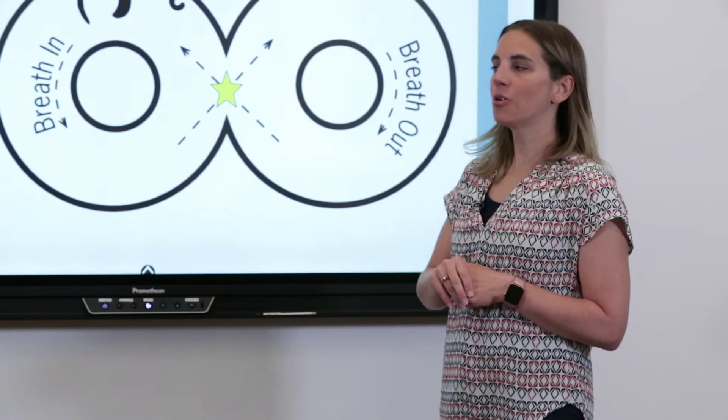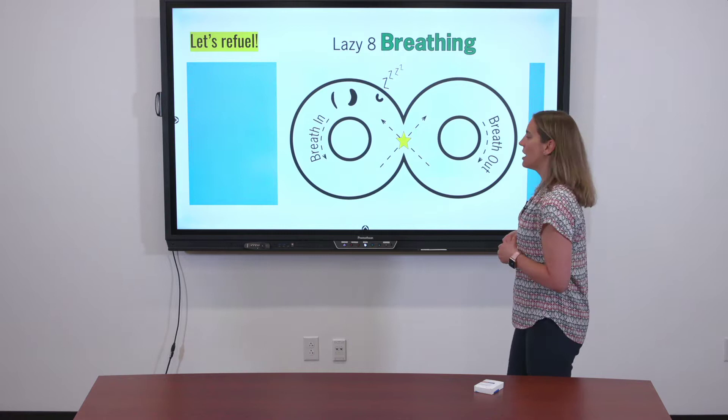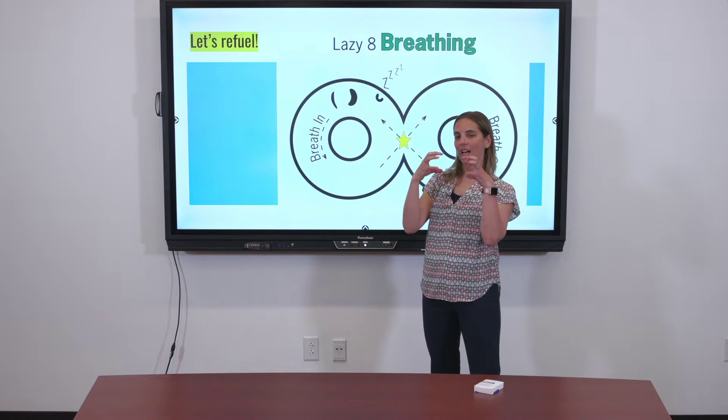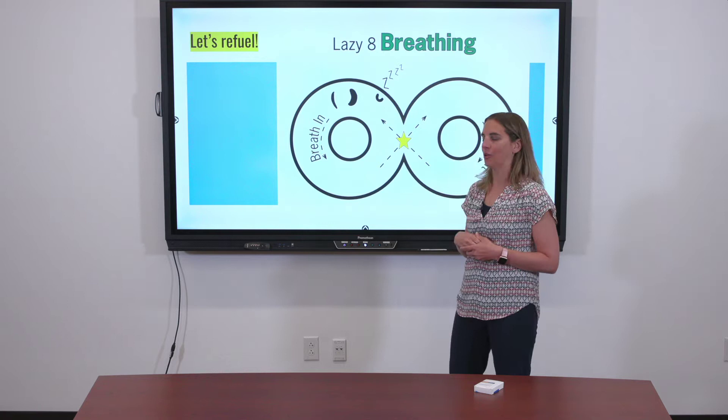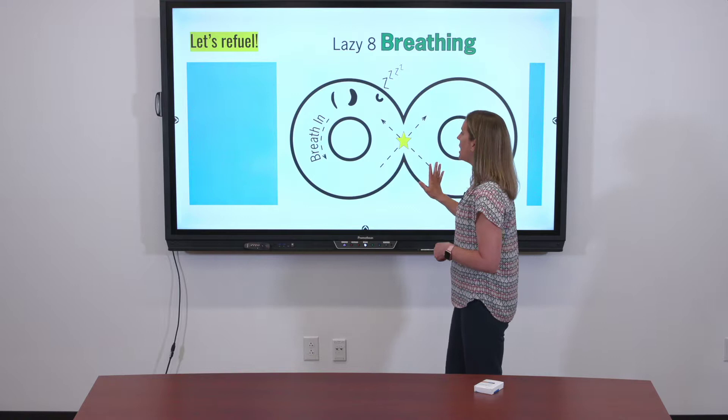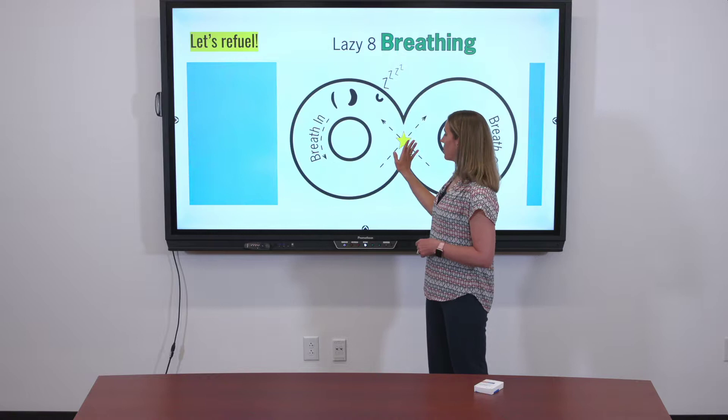Before we do that, let's take a second and do a quick refueling break. Today we're going to do something called lazy eight breathing. If you notice, my little guy looks like he's laying on his back with his eyes closed, just relaxing. You can either lay back or sit up nice and tall. We're going to imagine that you have an eight in front of you and we're just going to move our finger along it. When we go this direction, we're going to take a nice big deep breath in.